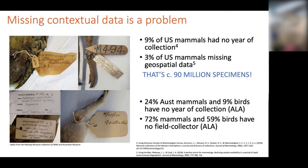While no studies have looked at missing data in Australian collections, Atlas of Living Australia shows that 25% of Australian mammals and 9% of birds have no year of collection, while 72% of Australian mammals and 59% of birds have no data for field collector. Older specimens are more likely to have been separated from their data, and it's these older specimens that can offer the most in research where time is a factor.